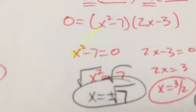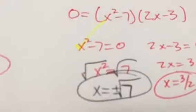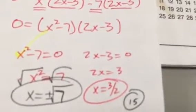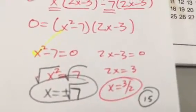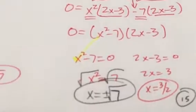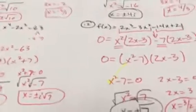Set x² - 7 = 0 to get x² = 7. Take the square root: x = ±√7. For 2x - 3 = 0, 2x = 3, so x = 3/2. This is your review video, 90.90 Quadratic, signing out.